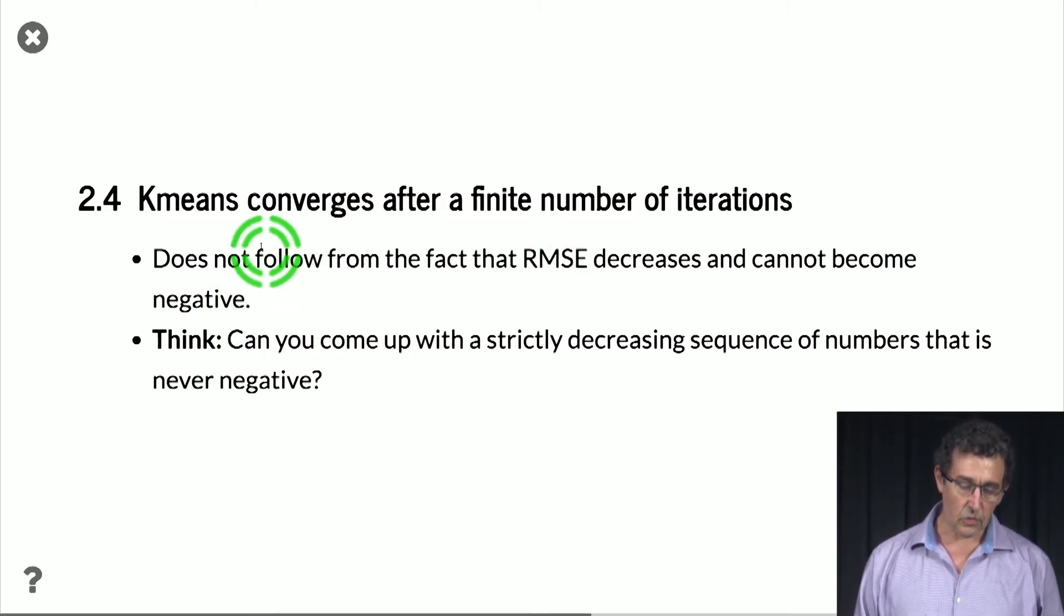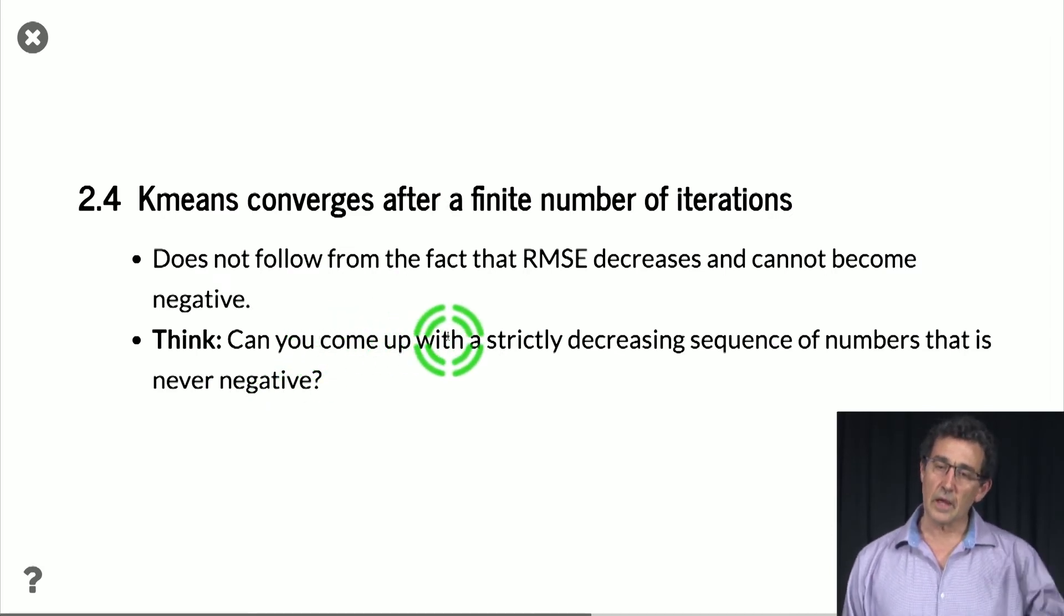That's not enough to basically just say that because it's strictly decreasing, that it will converge, right? Because think about it. You can have sequences of numbers that become closer and closer to zero and are always above zero but are never reaching a minimum. So that's like a sequence that converges to zero but is never equal to zero. But if you combine it with the fact that the number of possible configurations of the points is finite, then you actually get convergence.